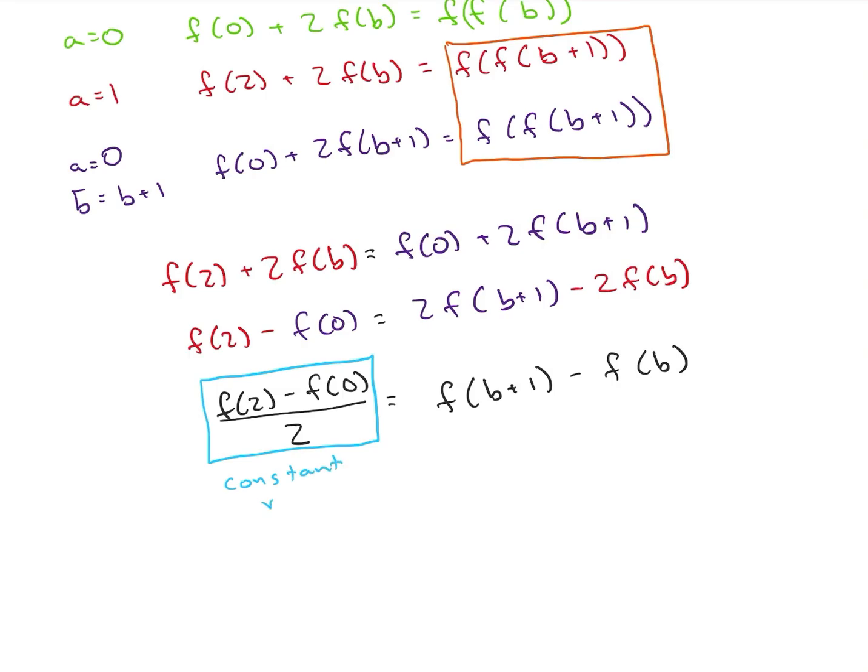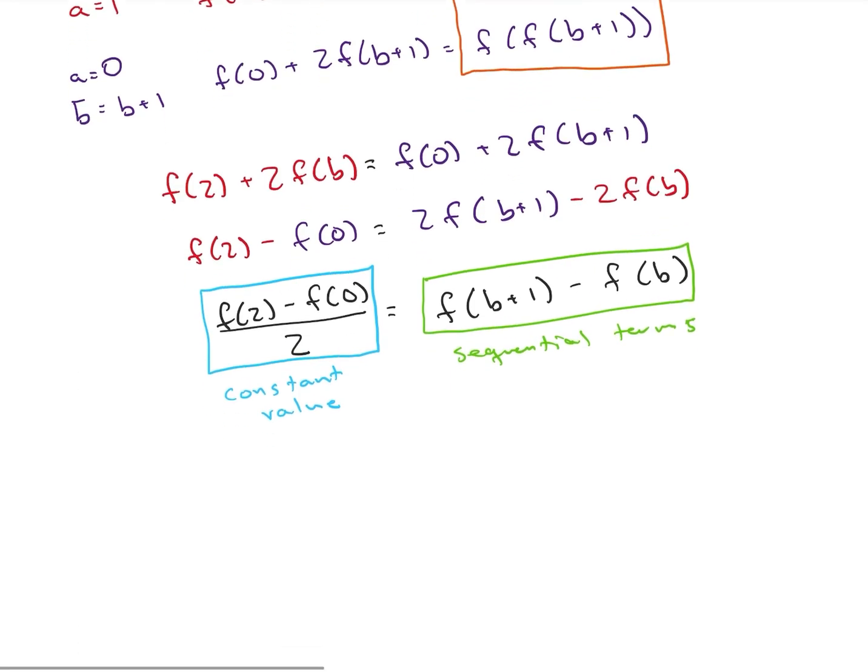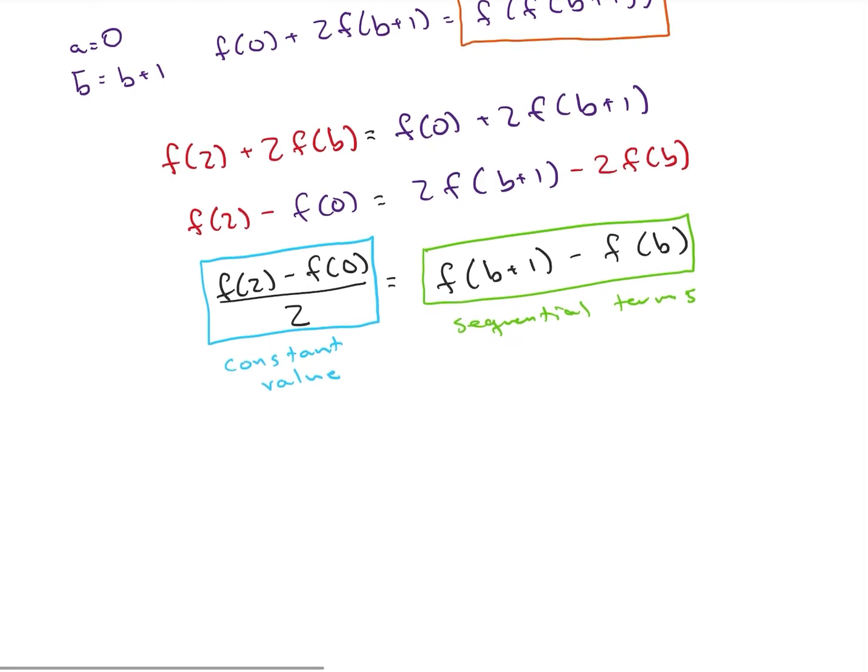And what I have on the right side, f of b plus 1 minus f of b, these are sequential terms because I'm evaluating at all integers. So we can see that I have what's called arithmetic growth to my equation, which means that I'm adding the same amount, this f of 2 minus f of 0 over 2, every time.